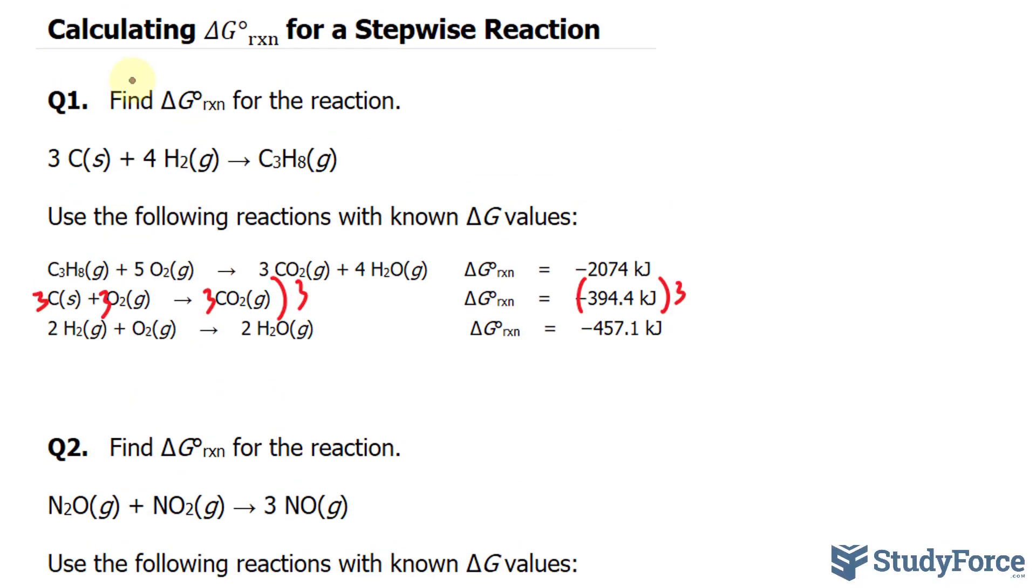What else is on the reactant side? Four H2 molecules. According to this chemical equation, there are two H2 molecules. So what I will do is multiply this whole thing by two. That way, this becomes a four, that becomes a two, and that becomes a four.